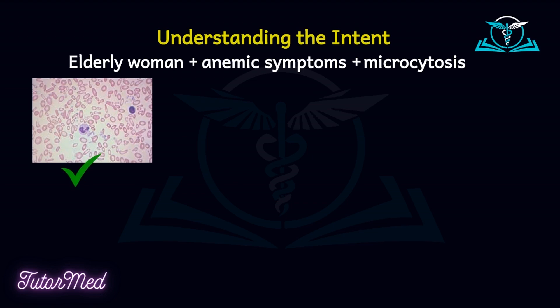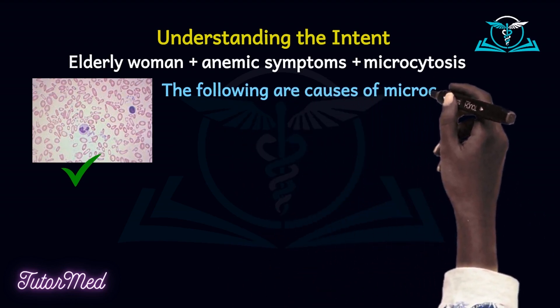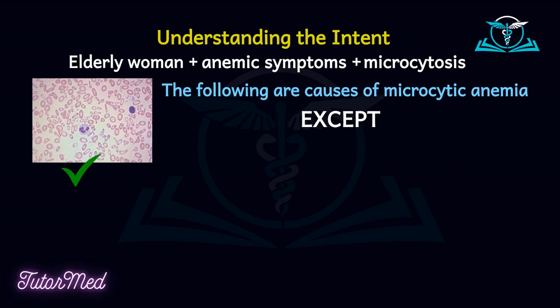To give you an idea of microcytosis, this is how it looks like on microscopy — you'll find that the patient's red blood cells are unusually small. Now, after you have summarized the question — elderly woman, plus anemia symptoms, and microcytosis — one other way to get the rationale of the question is to reframe or rephrase the question. Would you agree with me if I told you that this entire question is asking us for the causes of microcytic anemia, except? That is all.